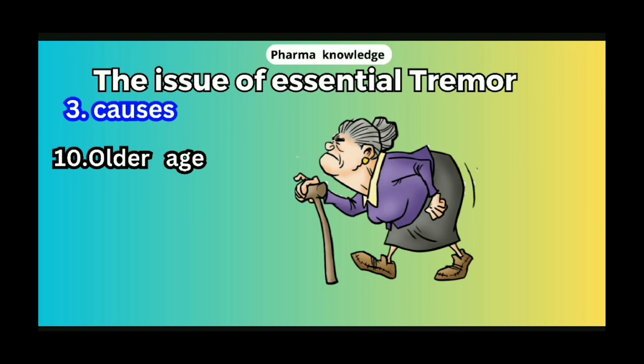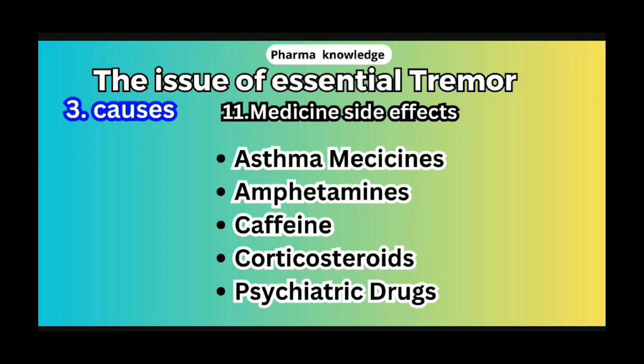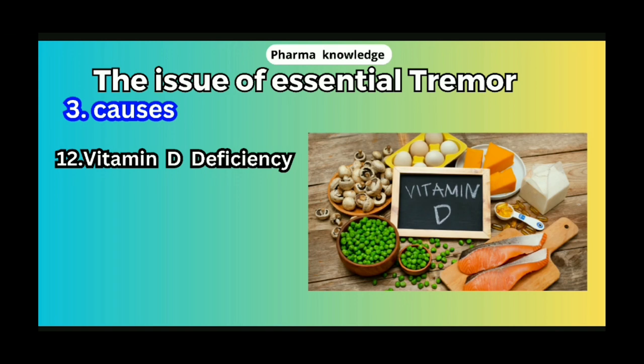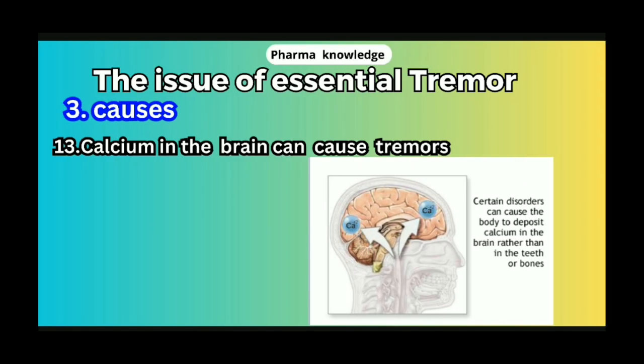Medicine side effects are also a cause — including asthma medicines, amphetamines, caffeine, corticosteroids, and psychotic drugs. Vitamin D deficiency is also associated with tremors. In some cases, calcium imbalance in the body can also cause tremors.